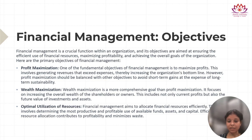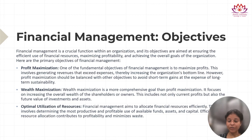The next is wealth maximization, which is a more comprehensive goal than profit maximization. It focuses on increasing the overall wealth of shareholders or owners and includes not only current profit but also the future value of investments and assets. The next is optimal utilization of resources. Financial management aims to allocate resources efficiently to different sectors and investment opportunities, determining the most productive and profitable use of available funds, assets, and capital, contributing to profitability and minimizing waste.